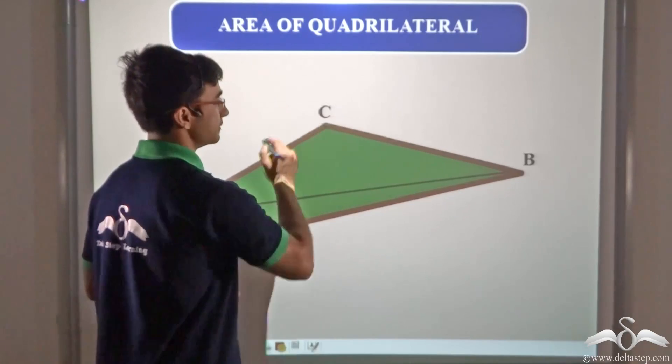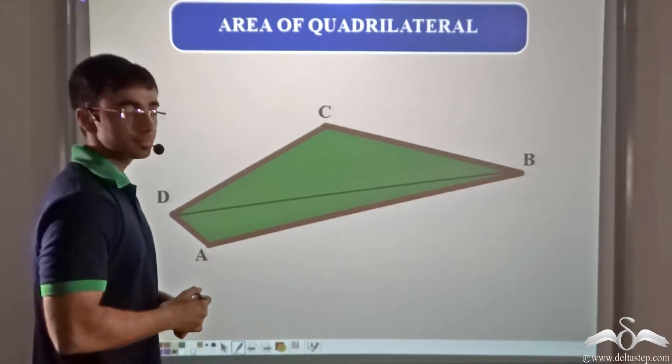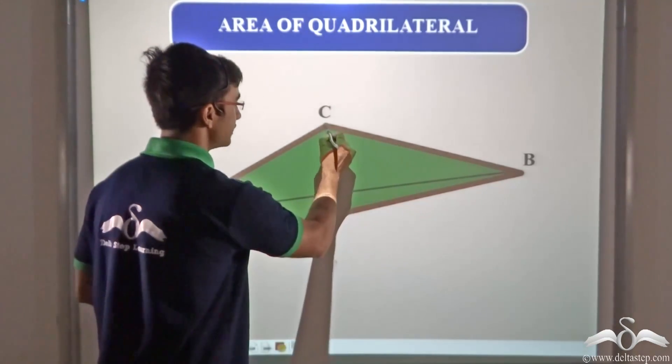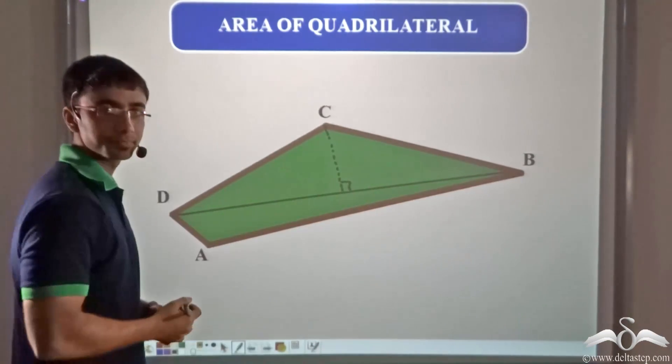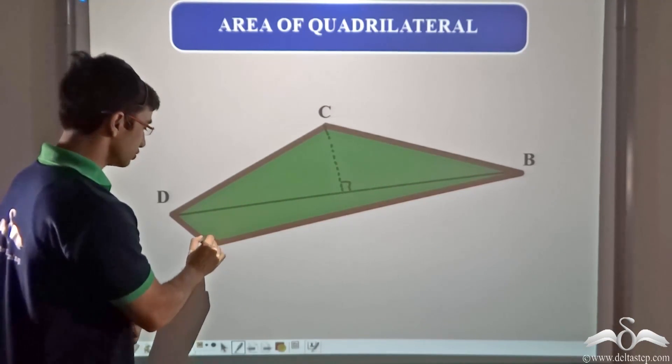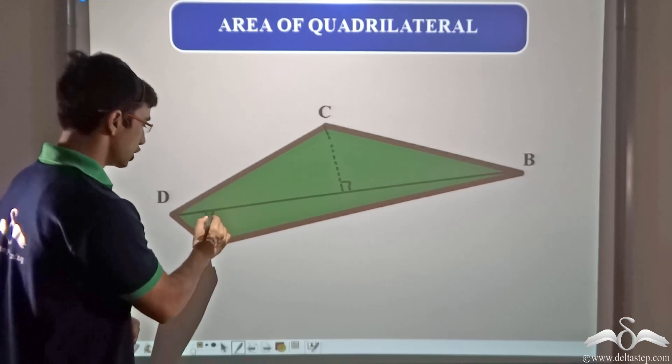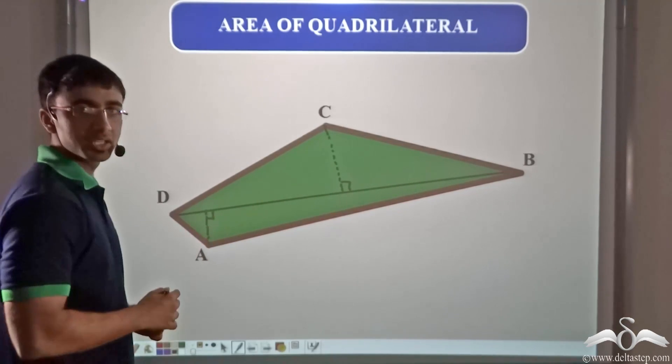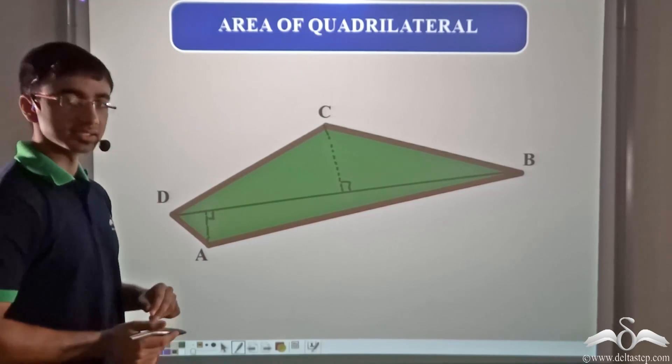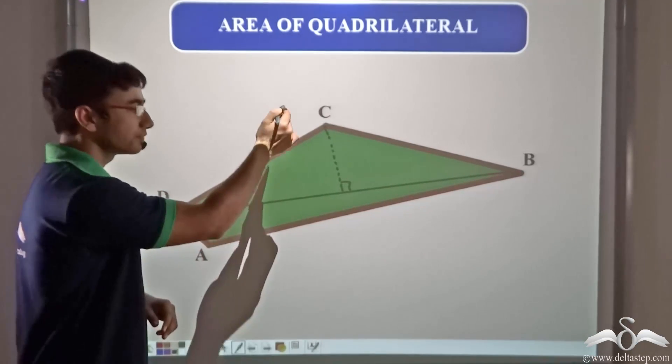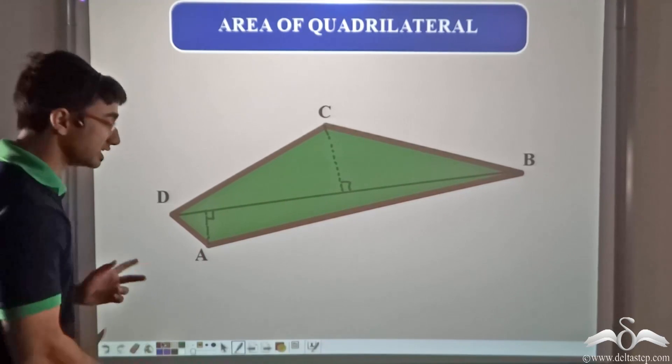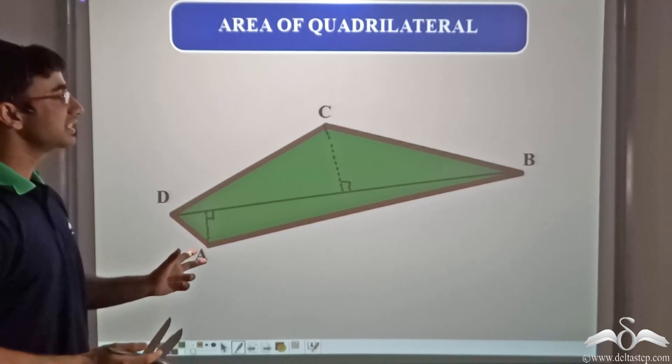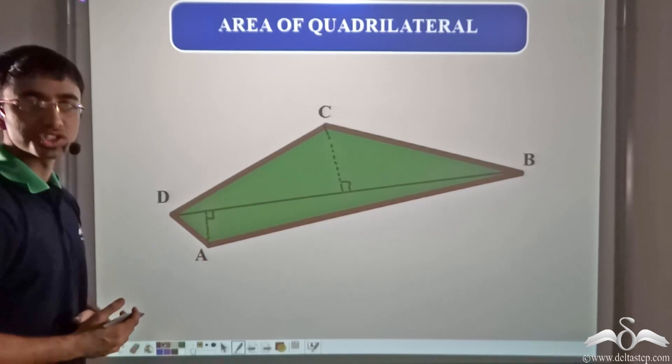Next we consider the other two vertices. Let's say vertex C. From vertex C we drop a perpendicular on BD, and from vertex A also we drop a perpendicular on BD. Now as you can see, we have obtained two triangles: triangle DBC and triangle ADB. With the help of these two triangles, we can easily calculate the area of the entire quadrilateral.